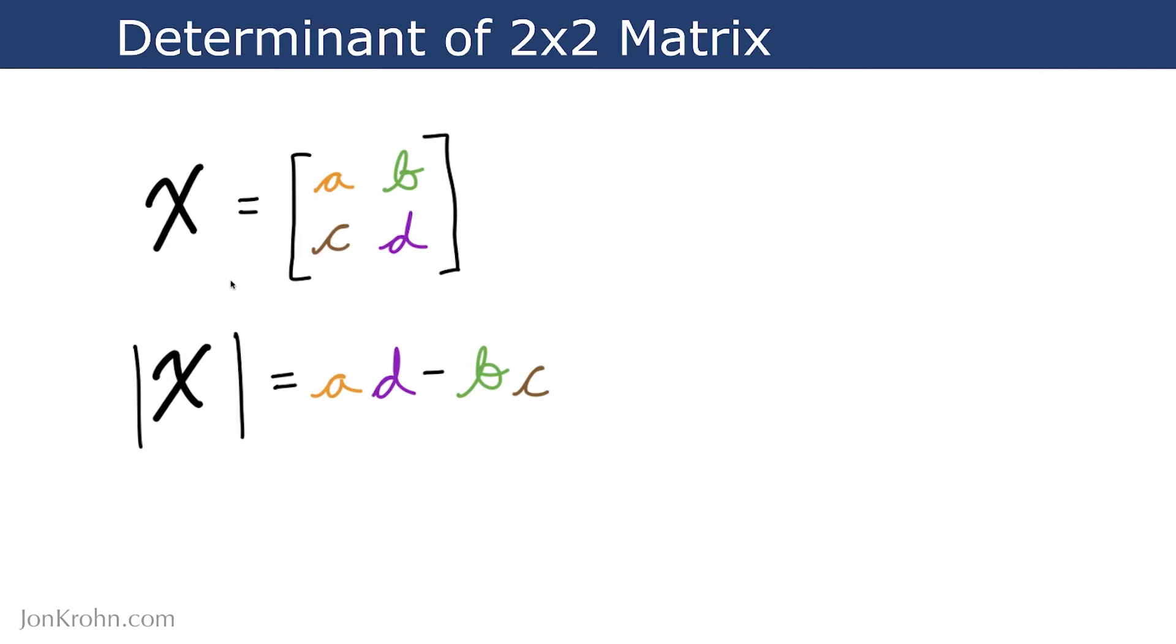So here's our formula for calculating the determinant of this matrix X. The notation that we can use here is two vertical lines. They look like absolute value bars, but we're applying them to a matrix. And so this determinant of our matrix X is equal to A times D minus B times C. So each one of these elements is a scalar value, and so it's just simple arithmetic.